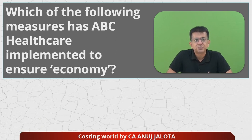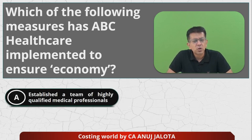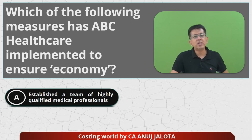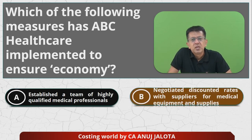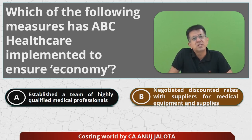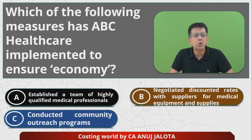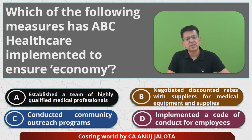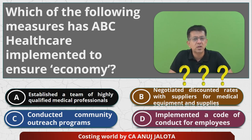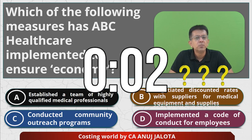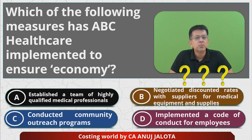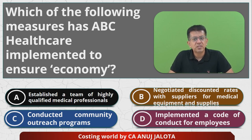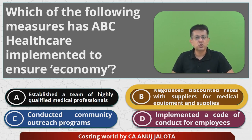Which of the following measures has ABC Healthcare implemented to ensure economy? Option A — establishing a team of highly qualified medical professionals — this is related to effectiveness. Option B — negotiated discount rates with suppliers for medical equipment and supplies — this was economy. Option C — conducted community outreach programs — again effectiveness. Option D — implemented a code of conduct — this was ethics. So the answer is B — we negotiated the rates for discounts.